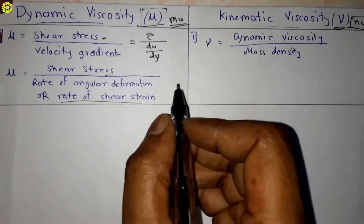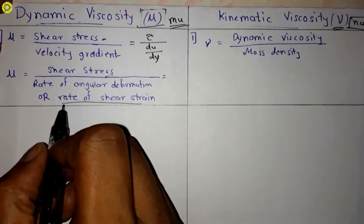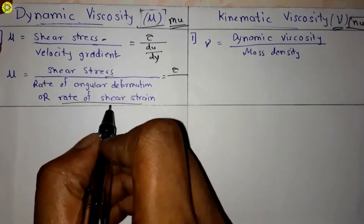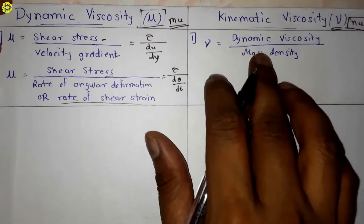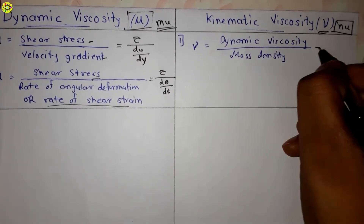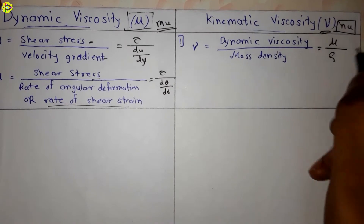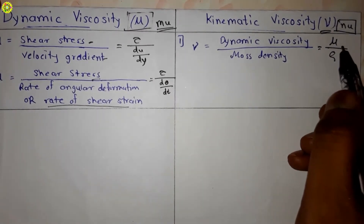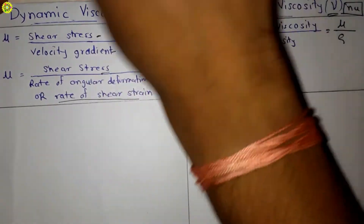Dynamic viscosity also equals shear stress (τ) divided by the rate of angular deformation or rate of shear strain, denoted by dθ/dt. Kinematic viscosity is the ratio of dynamic viscosity to mass density, so ν = μ/ρ, where μ is dynamic viscosity and ρ is mass density.